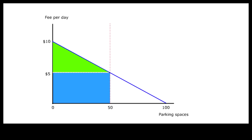The total benefit of paid parking consists of the blue area and the green area. The blue area represents the paid benefit received by drivers; it is also the total revenue received by the parking lot owner. The green area represents unpaid benefit that drivers with more urgent needs would have been prepared to pay if not for the uniform parking fee — in other words, it is the consumer surplus under paid parking.